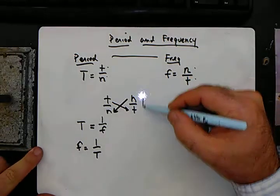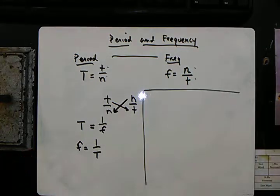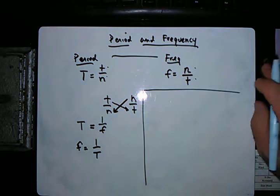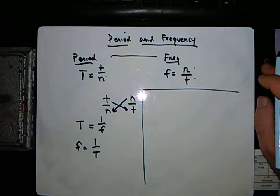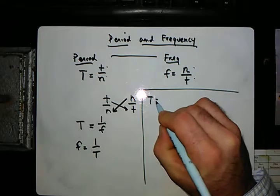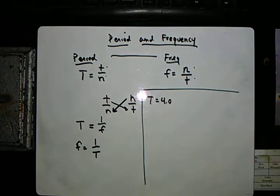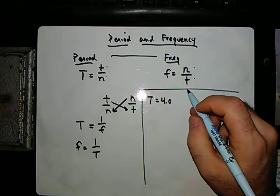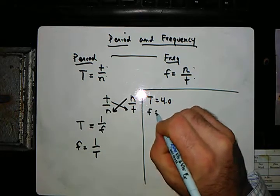So let's just look at a problem, a simple problem here. So if we have an object that has a period of four seconds, takes four seconds to go around the circle, what's the frequency of its motion?